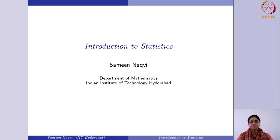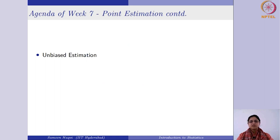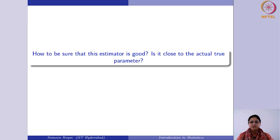Welcome to the seventh week of this course. In the last week we studied two different methods of estimation: method of moments and maximum likelihood estimators. In those two methods we found out how to estimate the population parameter and came up with a single point estimator. Now in this week, it is important to see whether the estimators obtained by those two methods have certain properties or not. The simplest property we are going to study is unbiased estimation — whether the estimators we obtained previously were unbiased or not. In addition, we are going to learn about the expectation maximization algorithm for cases where some observations are missing. Let us start with unbiased estimation.